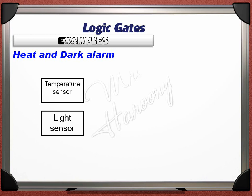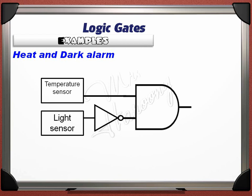Another example of alarm circuits using a temperature sensor and light sensor is the heat and dark alarm — an alarm that triggers if the temperature is high but there is no light. The light sensor is connected to a NOT gate. The temperature sensor connects to one input of an AND gate, while the light sensor followed by the NOT gate connects to the other input. If cold and dark, the temperature sensor gives 0 and the light sensor gives 0; the NOT gate inverts the 0 to 1, making the AND gate inputs 0 and 1.